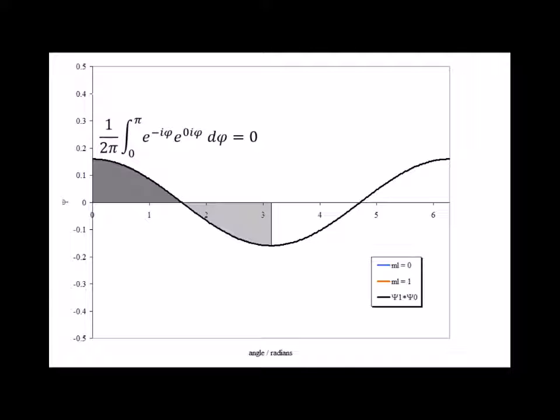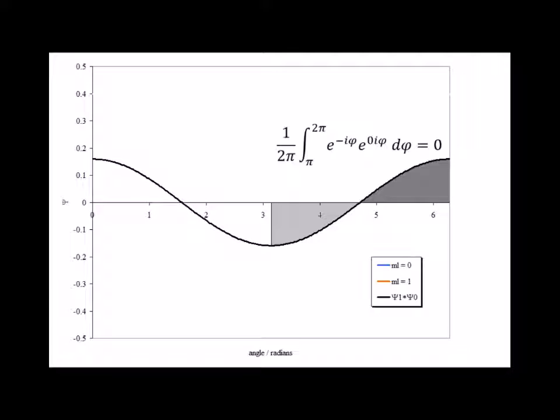Since regions above the x-axis are considered positive and those below the axis negative, the region shaded in dark gray is positive and that in light gray is negative. Since they have the identical shape and same size, they exactly counterbalance each other to equal a net area of 0, which tells us that the integral from 0 to pi of the real parts of the wave functions is exactly equal to 0. The same reasoning applies on the right-hand side of the graph, where a positive region in dark gray and a negative area in light gray exactly counterbalance, showing the integral over that region is exactly equal to 0.